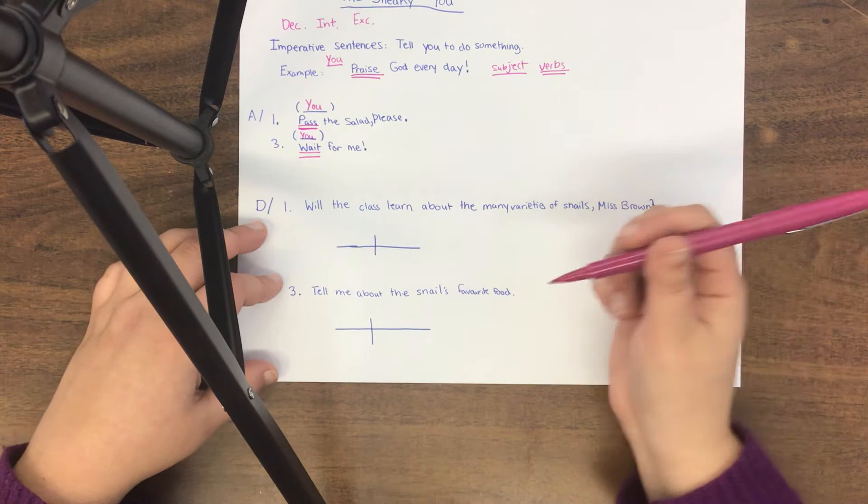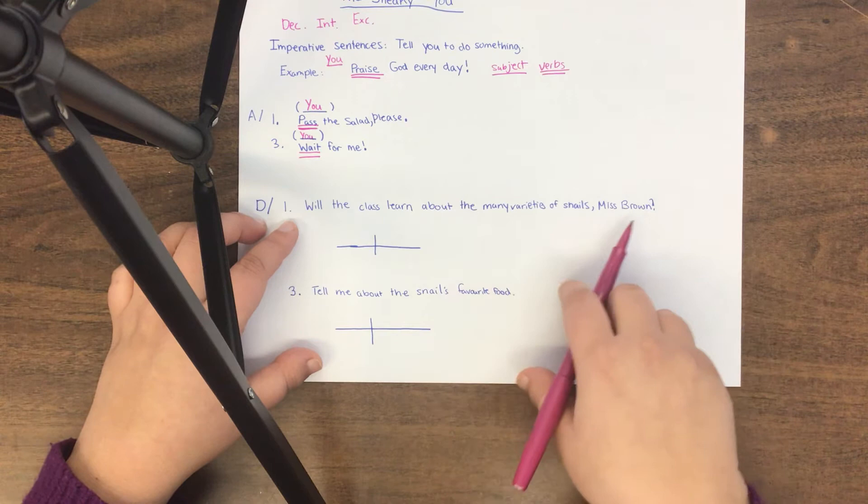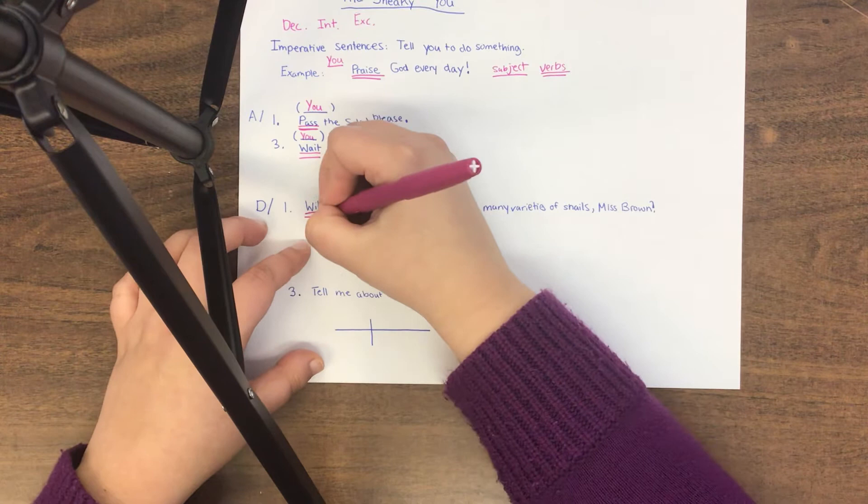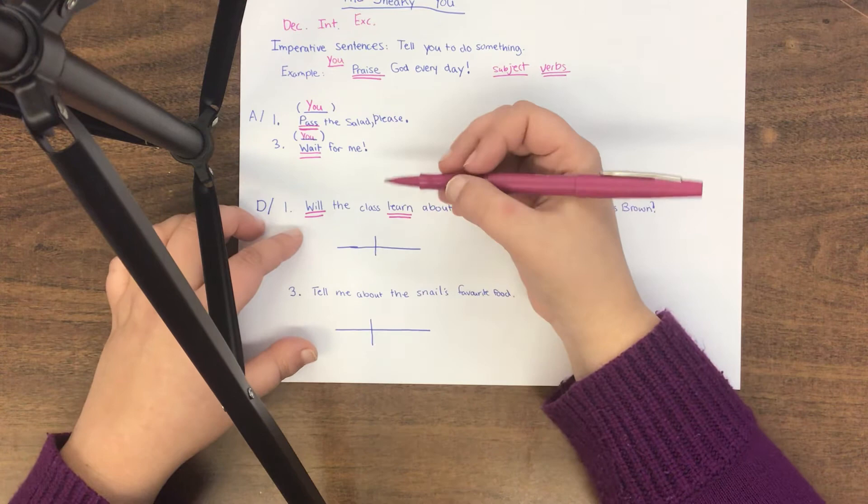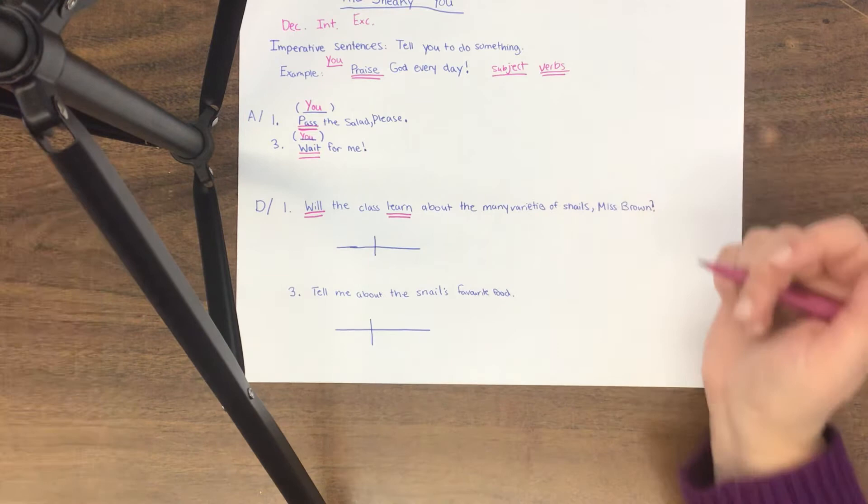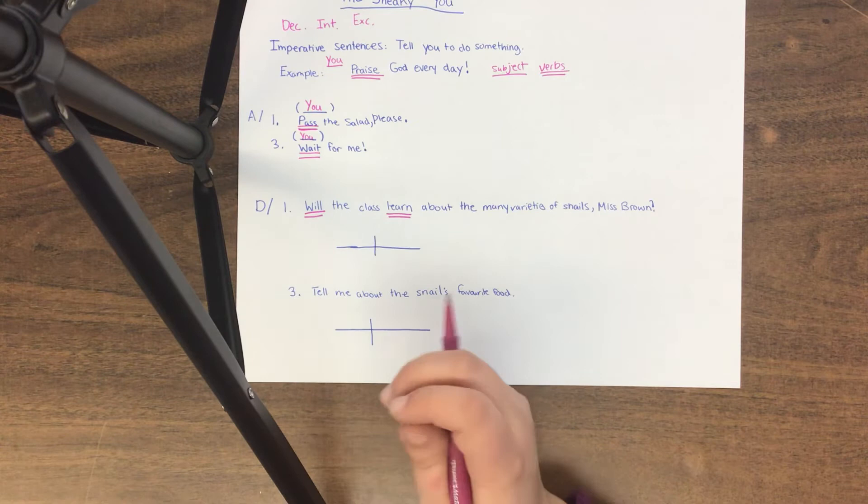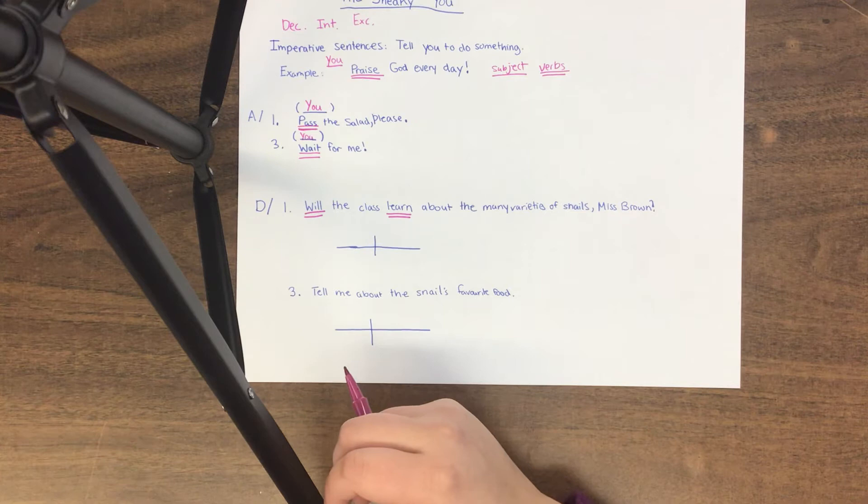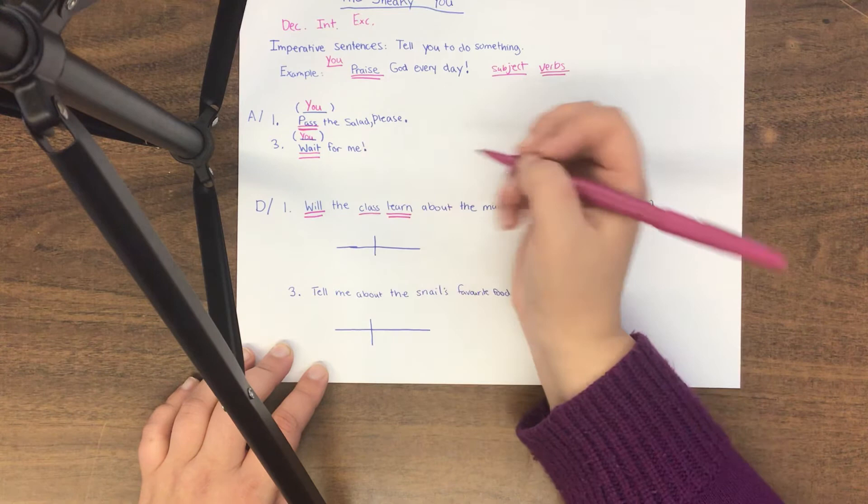Will the class learn about the many varieties of snails, Ms. Brown? Well, easy to find the verb. Will is a helping verb and learn is also a verb. Now, if this was an imperative sentence, we would know that the subject would be you. But the question is, is this an imperative sentence? Well, actually, it's a question. Will the class learn about this? So who's learning about this? It's not you. It's the class. The class is learning. So class is actually the subject.